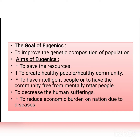The aims of eugenics include: to have intelligent people and a community free from mentally retarded individuals; to reduce human suffering; to reduce economic burden on the nation due to disease.